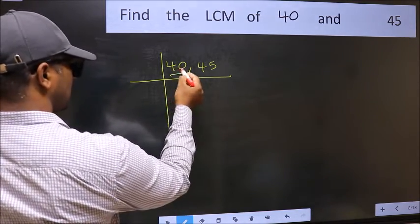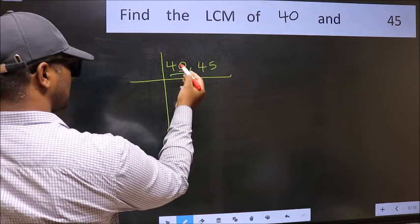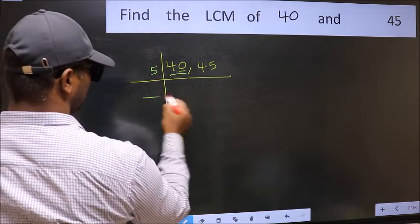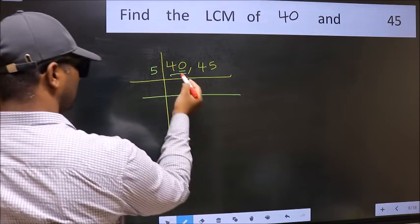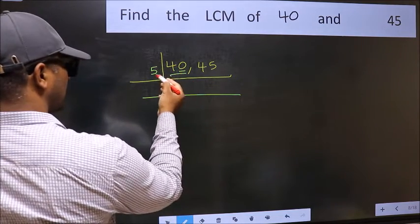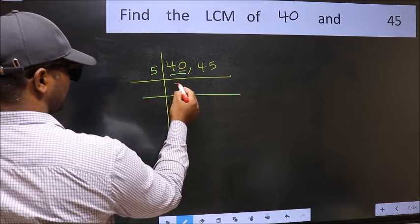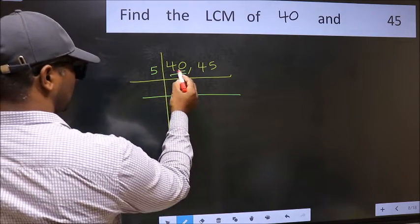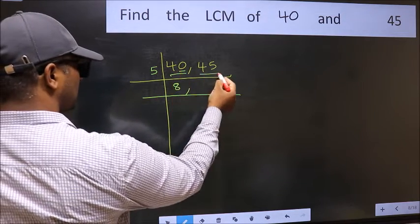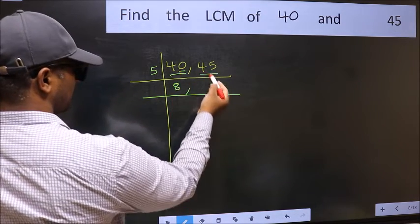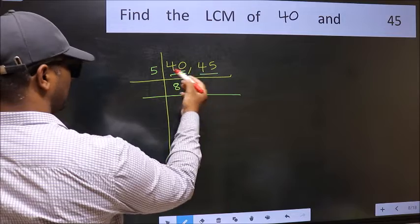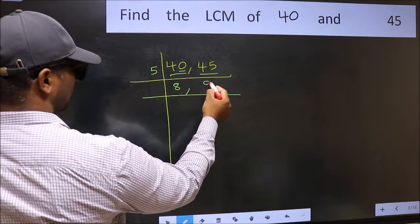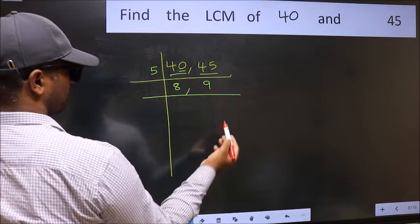In this number, the last digit is 0, so take 5. When do we get 40 in the 5 table? 5 times 8 is 40. The other number is 45. When do we get 45 in the 5 table? 5 times 9 is 45.